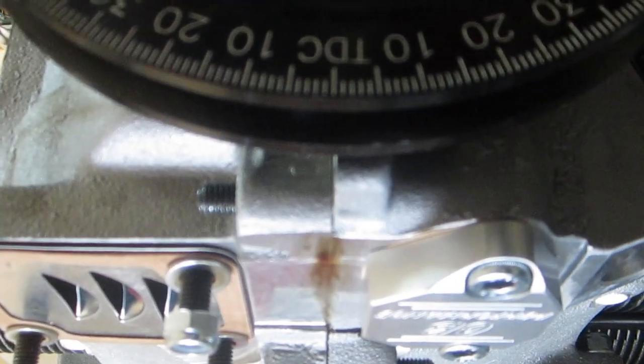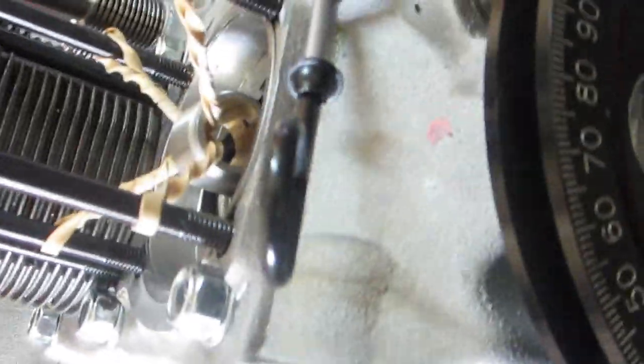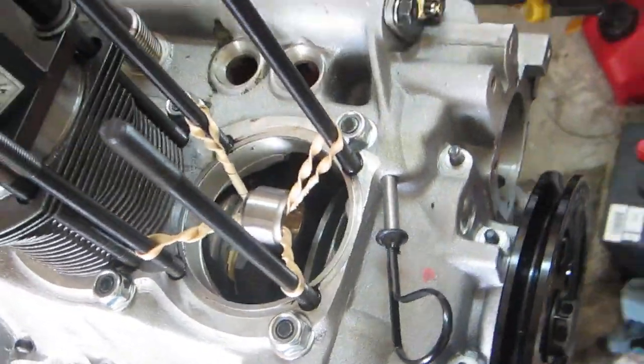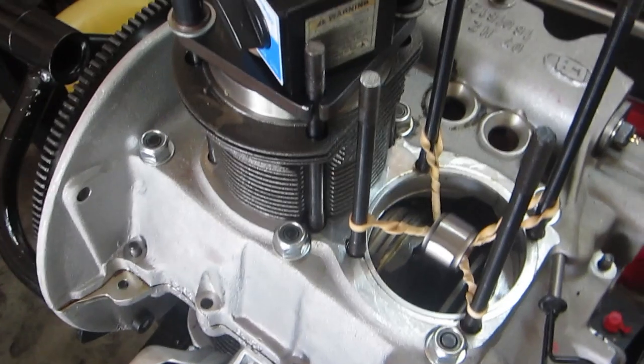And again, the piston is at top dead center and the crank pulley is more or less reflecting that. You see the TDC mark aligns with the case half split. That's less important. More important is that you've used the dial indicator to determine your true top dead center.